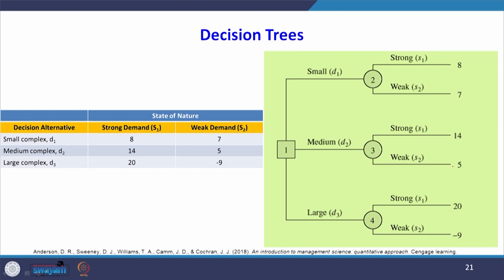This payoff table can also be represented in the form of a tree — called a decision tree. Look at D1, D2, D3 as decision alternatives. The circle represents the states of nature — strong demand or weak demand. The point here is that any payoff table can be represented in the form of a decision tree, which I will explain in the next lecture.